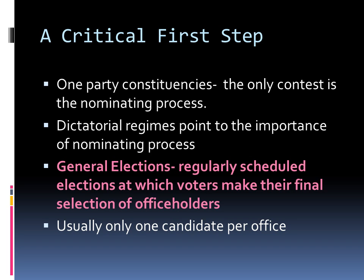In one-party constituencies, those areas where one party regularly wins elections, the nominating process is usually the only point at which there is any real contest for a public office. Once the dominant party has made its nomination, the general election is little more than a formality. Dictatorial regimes point up the importance of the nominating process. Many of them hold general elections, or regularly scheduled elections at which voters make the final selection of officeholders, much as democracies do. But typically, the ballots used in those elections list only one candidate for each office, the candidate of the ruling clique.